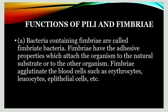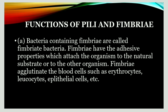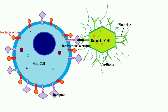Now let us discuss the functions of pili and fimbriae. Bacteria that have fimbriae are called fimbriate bacteria. The main role of fimbriae is adhesion — helping an organism attach to another organism or to a natural substrate. Fimbriae also help in agglutinating blood cells such as erythrocytes, leukocytes, and epithelial cells. This is illustrated by a diagram showing a bacterial cell adhering to a host cell via fimbriae.